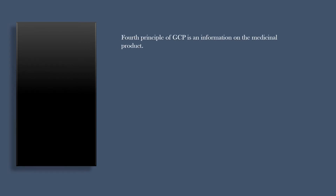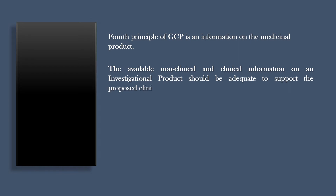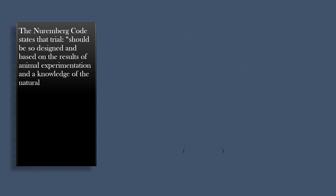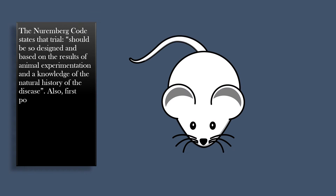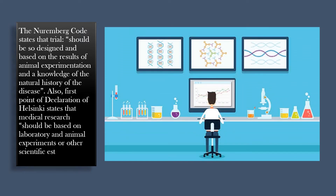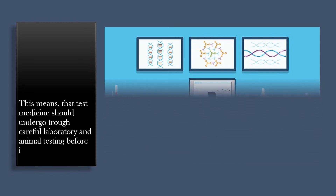The fourth principle of GCP is information on the medicinal product. The available non-clinical and clinical information on an investigational product should be adequate to support the proposed clinical trial. The Nuremberg Code states that the trial should be based on the results of animal experimentation and knowledge of the natural history of the disease. The Declaration of Helsinki also states that medical research should be based on laboratory and animal experiments or other scientifically established facts, meaning test medicine should undergo careful laboratory and animal testing before it could be tested in people.